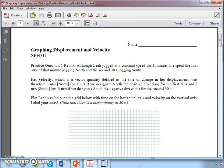So the first problem. Leah's jogging at constant speed for a minute. She spends the first 30 seconds that minute jogging north, and the second 30 seconds jogging south. Her velocity, defined as the change in her displacement, was 3 meters per second north for the first 30 seconds and 3 meters per second south for the second 30 seconds. So your challenge is to plot her velocity on the grid below with time on the horizontal axis and velocity on the vertical axis. Be sure and label your axes and note that you're not going to be able to connect this whole thing up with one straight line. There's going to be a discontinuity at 30 seconds. Go ahead and pause the video and do that, please.